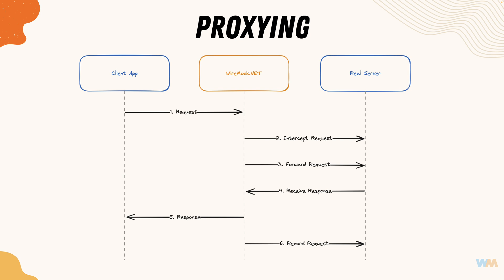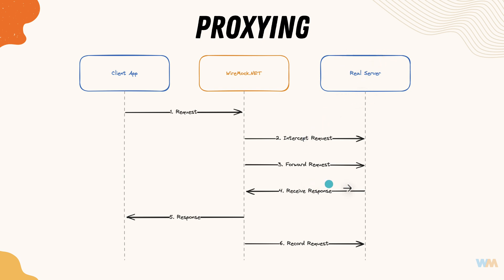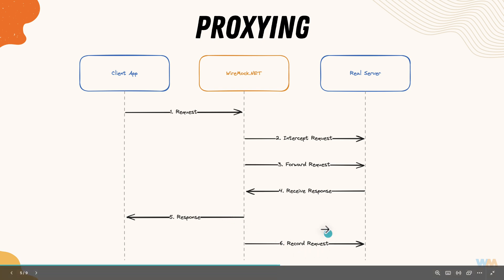As you can see in the diagram, for proxying we have a client application. When it sends a request, it actually sends it to the WireMock.NET server — because WireMock.NET is now acting as a proxy. WireMock.NET intercepts the request and forwards it to the real API server, receives the response, and sends it back to the client application.